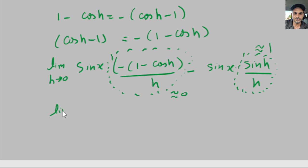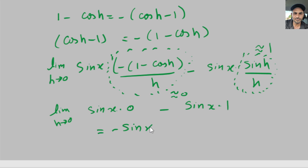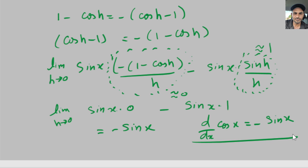So we get the limit as h goes to zero equals sine of x times zero minus sine of x times one. When we simplify this, we get negative sine of x. So the derivative of cosine x equals negative sine x. That's what we just proved.